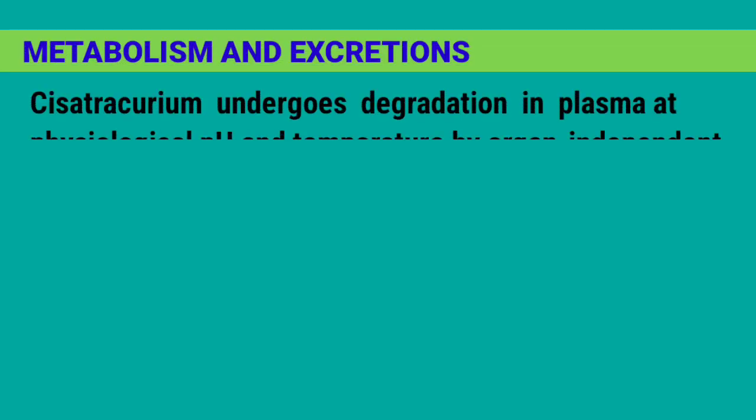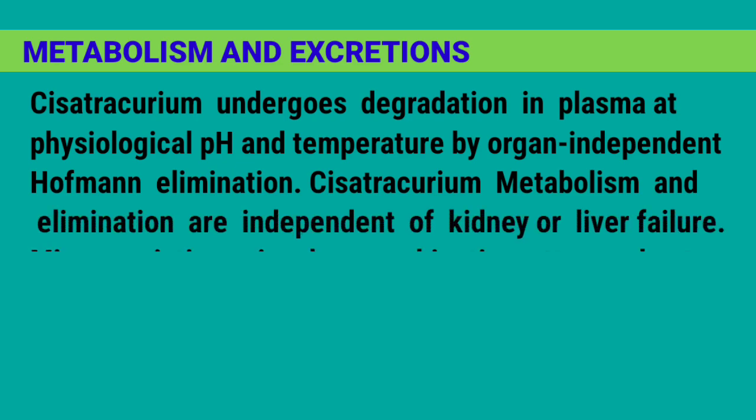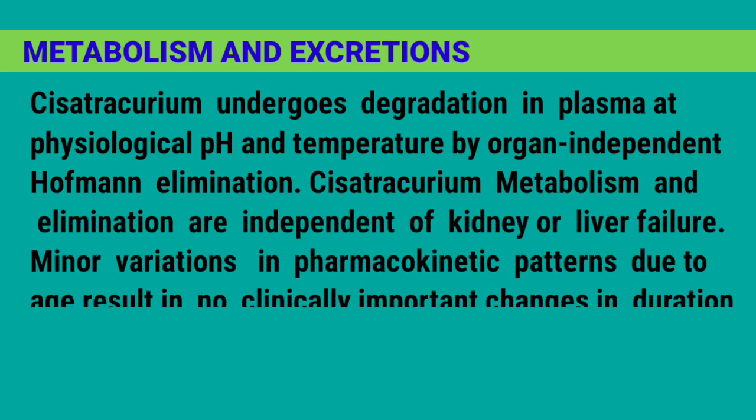Metabolism and Excretion: Cisatricurium undergoes degradation in plasma at physiological pH and temperature by organ-independent Hoffman elimination. Cisatricurium metabolism and elimination are independent of kidney or liver failure. Minor variations in pharmacokinetic patterns due to age result in no clinically important changes in duration of action.